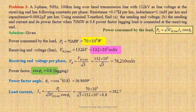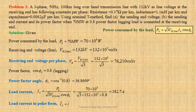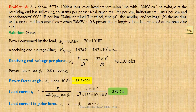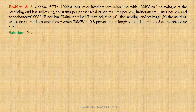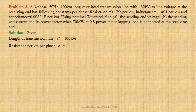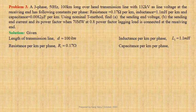Load current may be written in polar form as IL = 382.7 amperes at an angle of −36.8699 degrees. Given: length of the transmission line D equals 100 km; resistance per km per phase, R1 equals 0.17 ohm; inductance per km per phase, L1 equals 1.1 mH; and capacitance per km per phase, C1 equals 0.0082 microfarad.